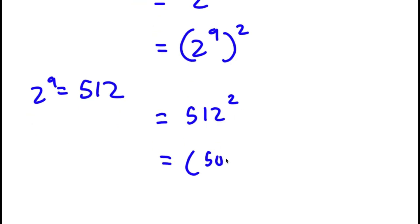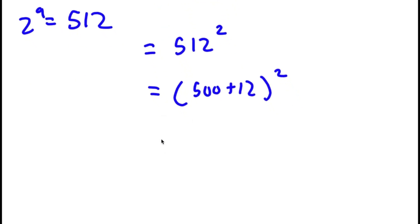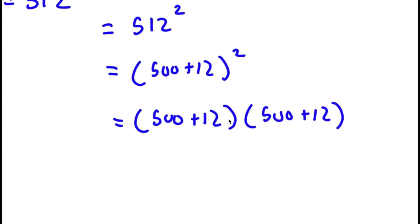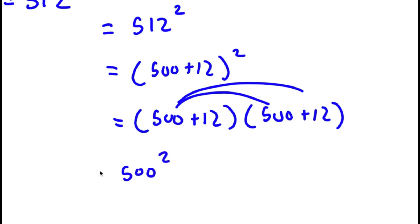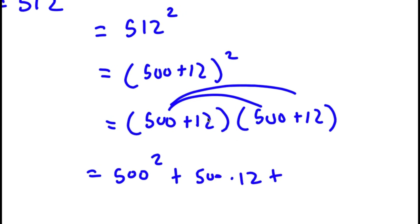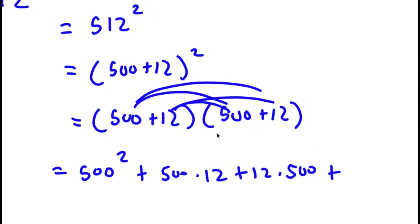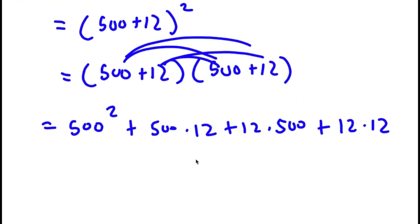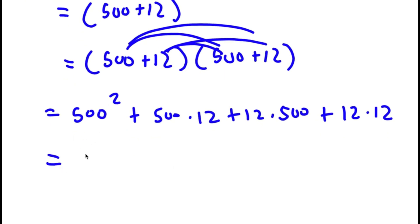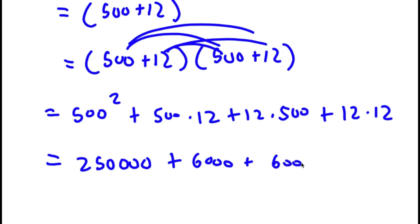Now 512 to the power of 2, I can write as 500 plus 12 to the power of 2. And this is the same thing as 500 plus 12 times 500 plus 12. So now to solve this, I'm going to first start by distributing 500. So I have 500 times 500, which is the same thing as 500 squared, plus 500 times 12. Plus, distributing the 12: 12 times 500 plus 12 times 12.